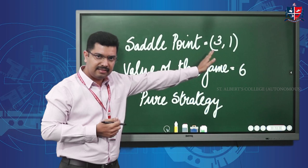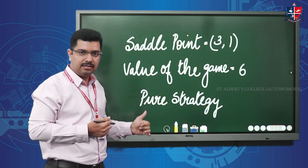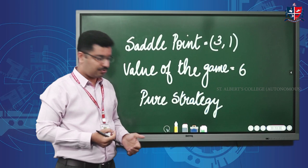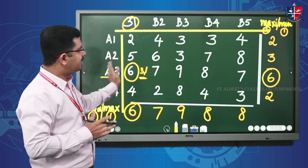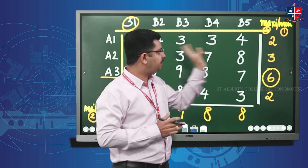So to summarize: the saddle point is (3,1) and the value of the game is six. Since minimax equals maximin, this is a pure strategy solution. To recap the steps: write the question, then write 'maximin' and 'minimax' in their positions, and perform row operations first.